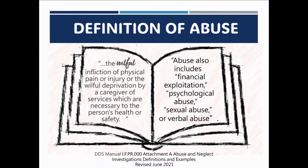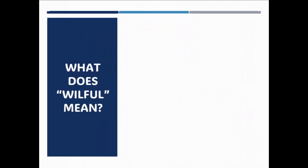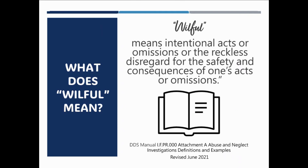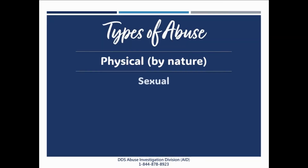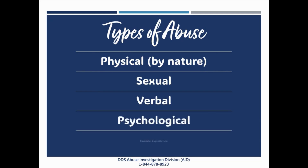So what does abuse mean? Abuse is the willful infliction of physical pain or injury, or the willful deprivation by a caregiver of services which are necessary to the person's health or safety. Abuse also includes financial exploitation, psychological abuse, sexual abuse, or verbal abuse. Willful means intentional acts or omissions, or the reckless disregard for the safety and consequences of one's actions or omissions. The different types of abuse that could occur are physical by nature, sexual, verbal, psychological, and financial exploitation.